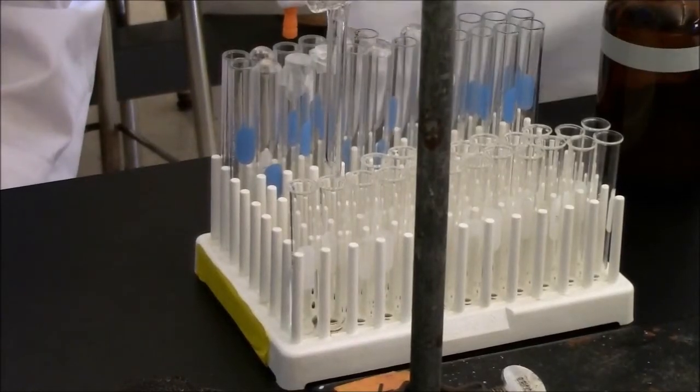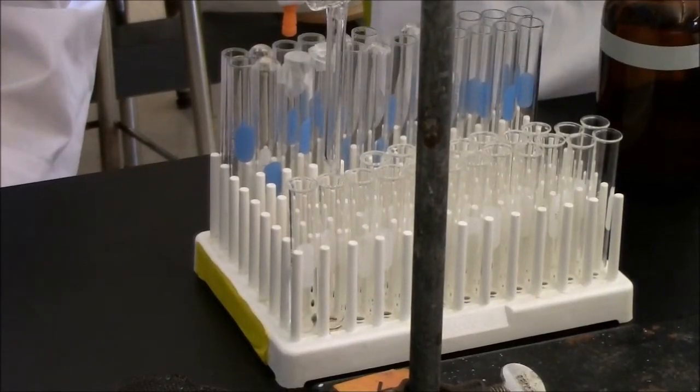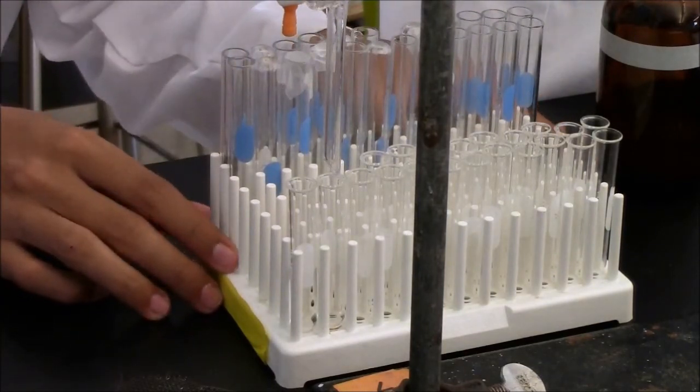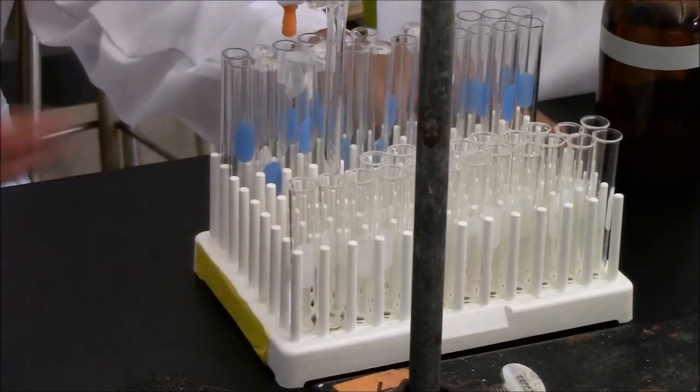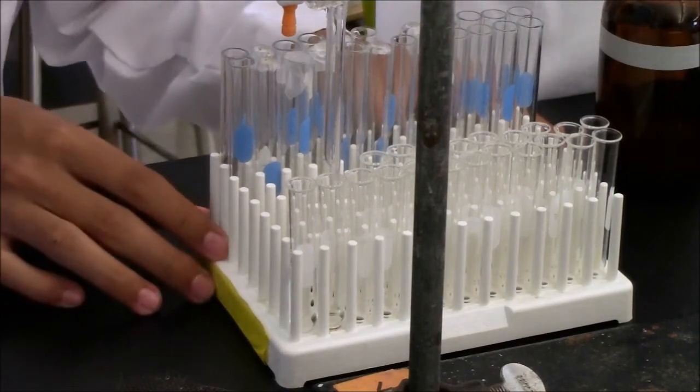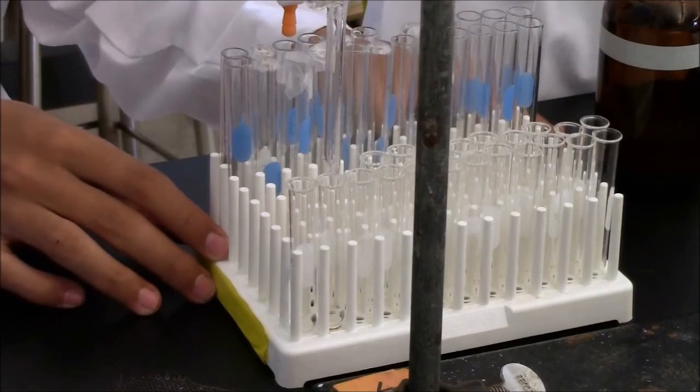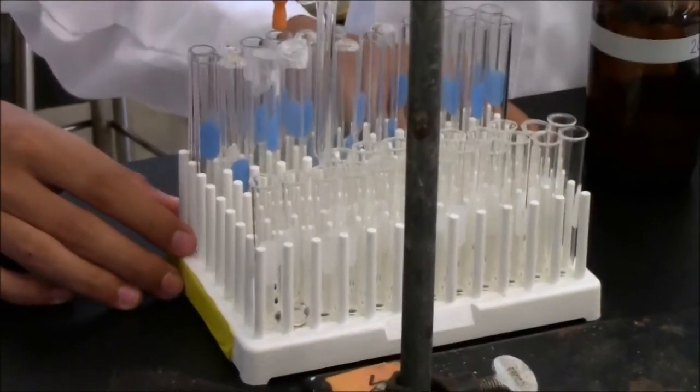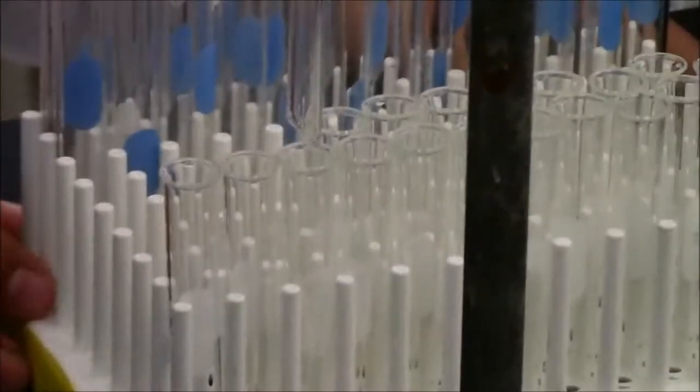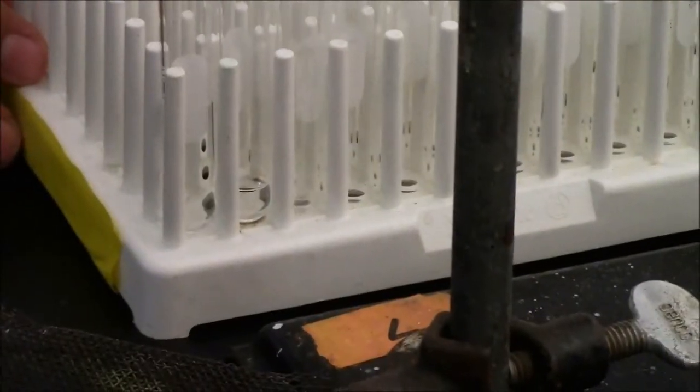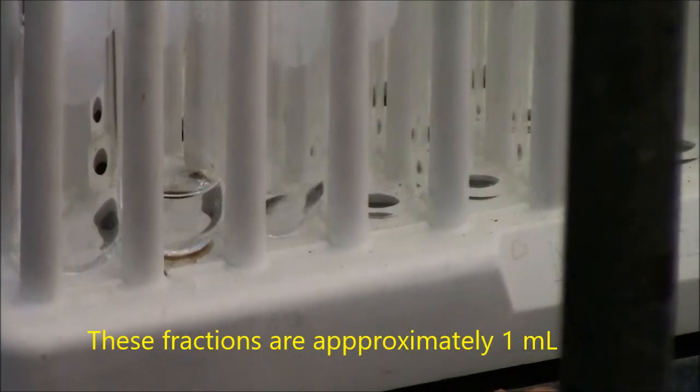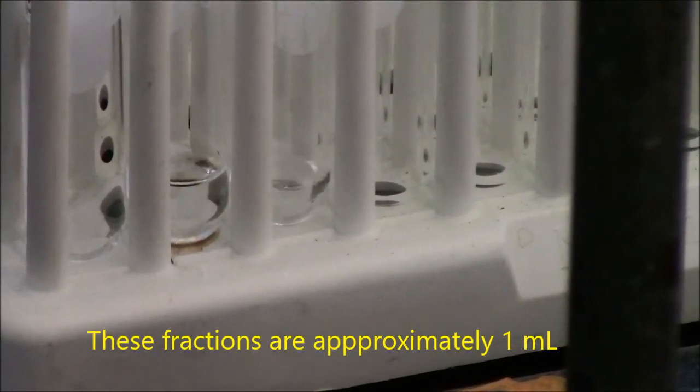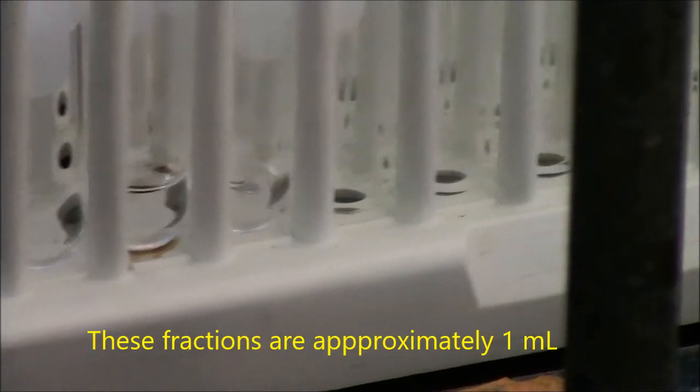Now we're collecting fractions. The idea is to get about a milliliter to come out of the column, then switch to the next test tube and collect another milliliter. The molecules of interest will come out in a particular fraction, or maybe a few fractions. This is how you separate molecules on the column. We're collecting the second series fraction, the third total fraction.